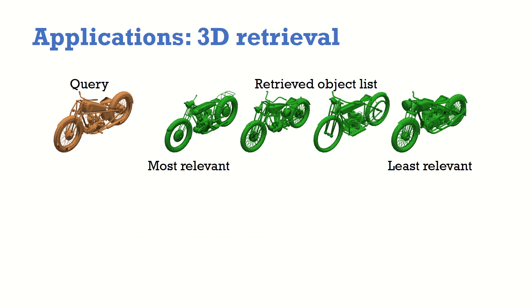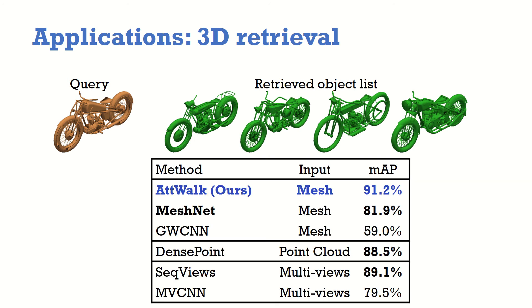The second application is 3D retrieval. Given a query object in brown, the goal is to retrieve objects ordered by their relevancy. Our system retrieves the green motorcycles ordered from left to right. And here are results from ModelNet40 where we achieve state-of-the-art results.